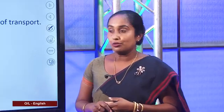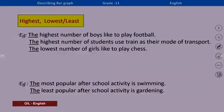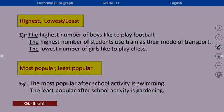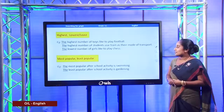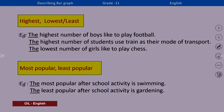'The lowest number of girls like to play chess.' Here also you can see superlative adjectives 'most popular' and 'least popular'. For example: 'The most popular after-school activity is swimming.' 'The least popular after-school activity is gardening.'